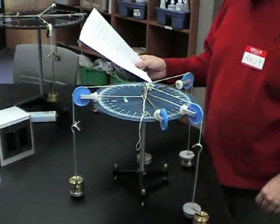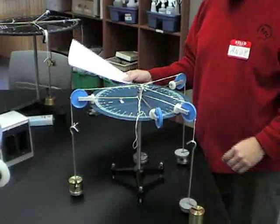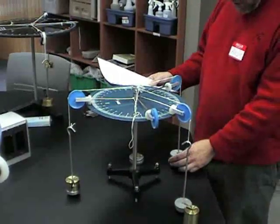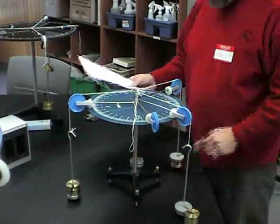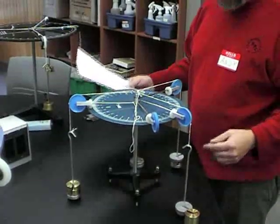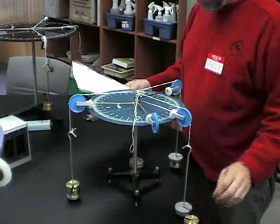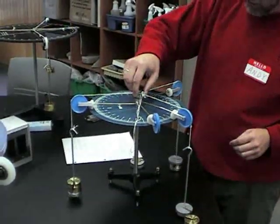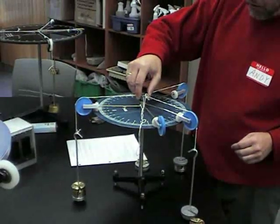So 350 grams, which is 3.5 newtons. Then I have 300 grams at 155 degrees, and then I have 150 grams at 240 degrees, and as we can see, the whole thing is balanced.